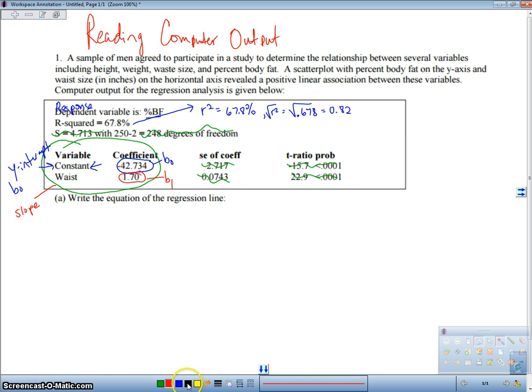All right, so now we're going to go ahead and write our equation of our regression line. So we're going to have percent body fat hat equals b sub 0, negative 42.734, plus 1.70, our slope, times waist. And this is our regression line.